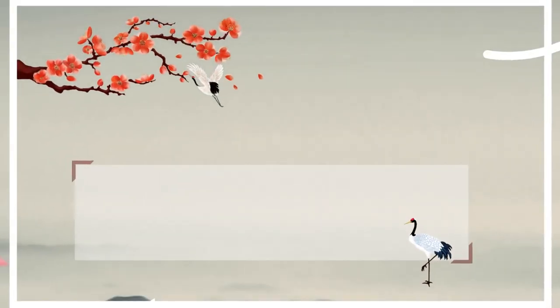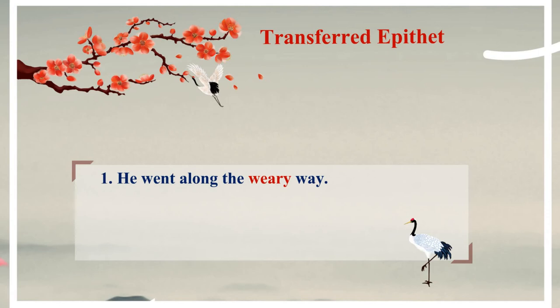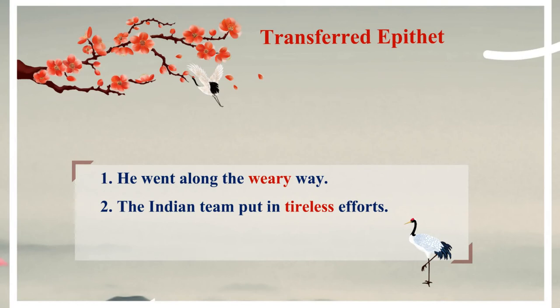We move on to the next figure of speech: the transferred epithet. The title itself tells us there is a transfer or shift of an epithet — an adjective — from one entity to another. For example, 'He went along the weary way.' It is he who is weary, but the weariness is shifted from him to the way, so the way is called weary.